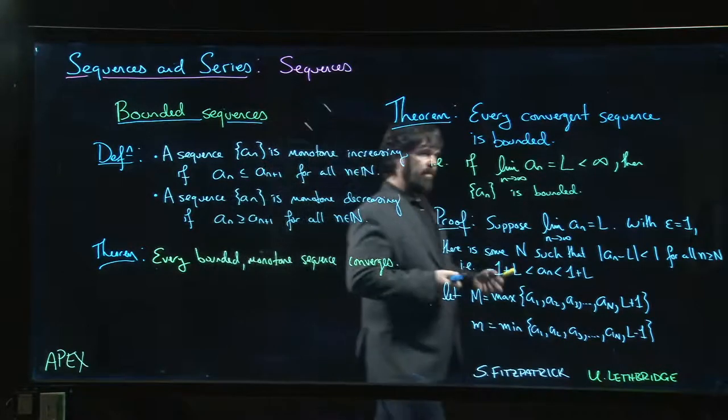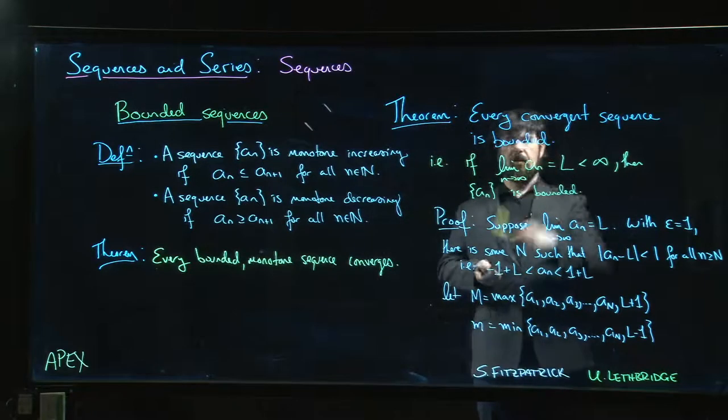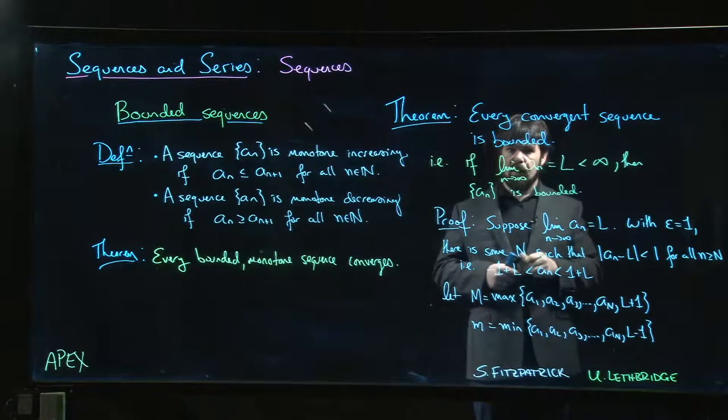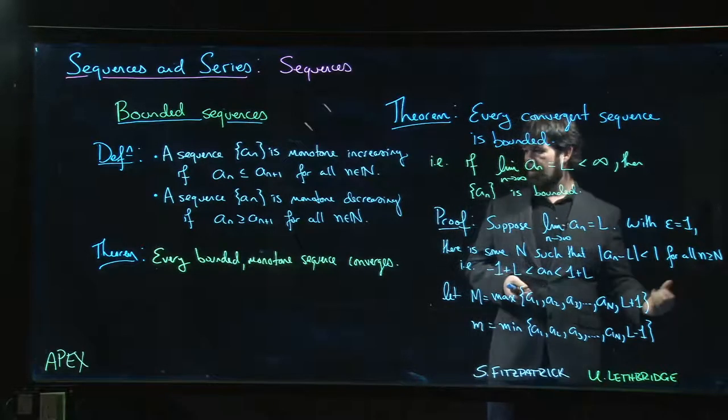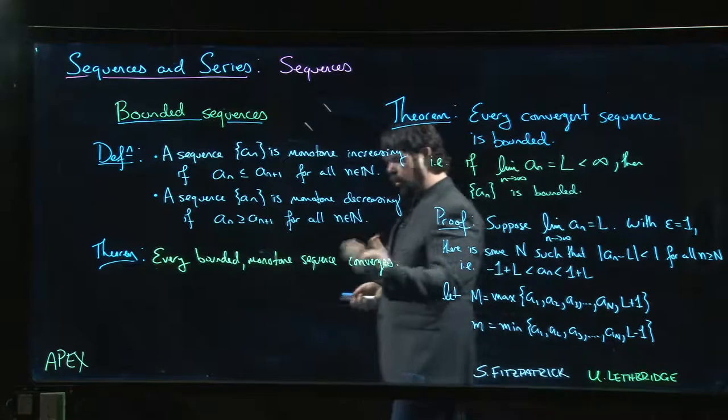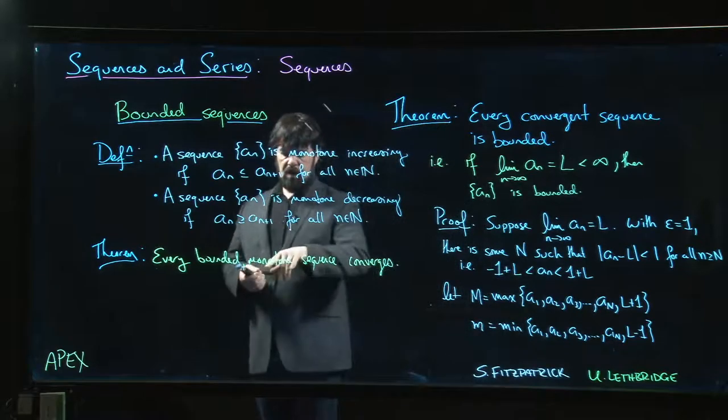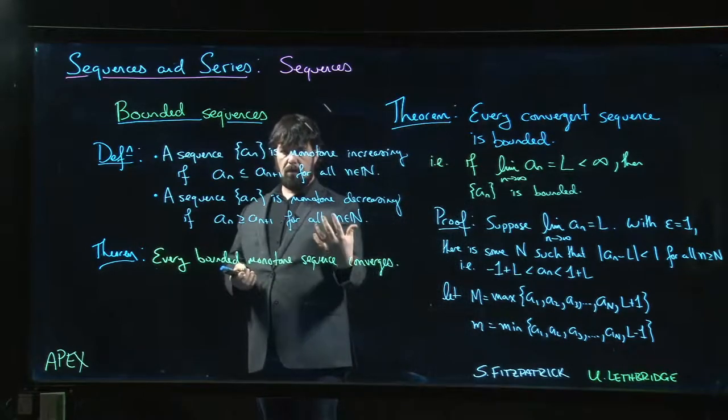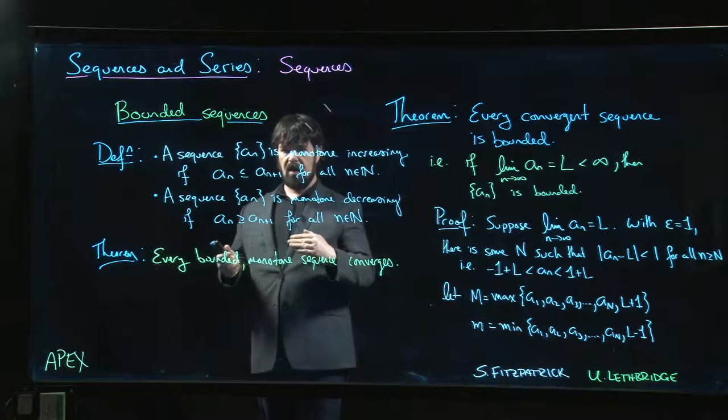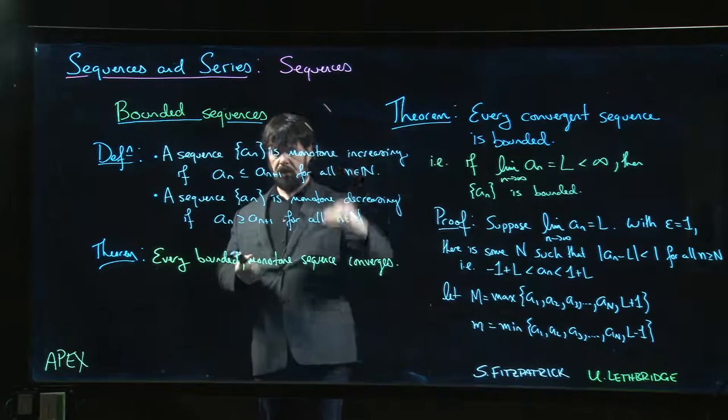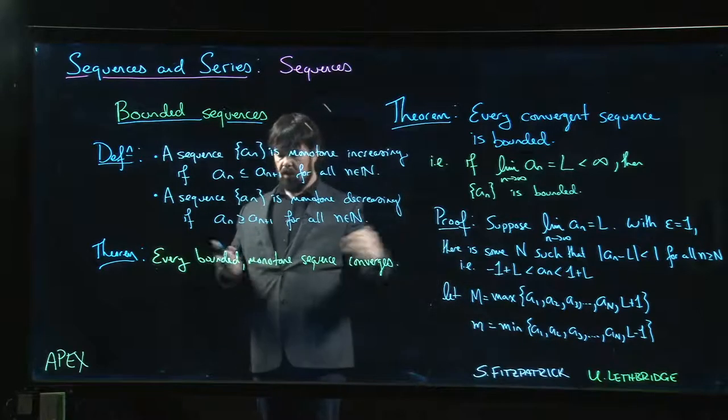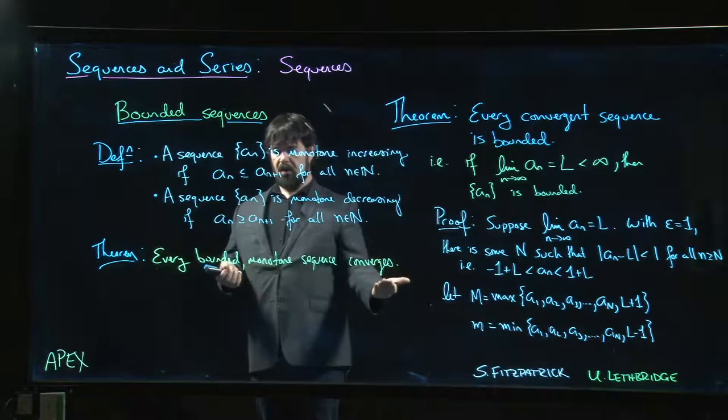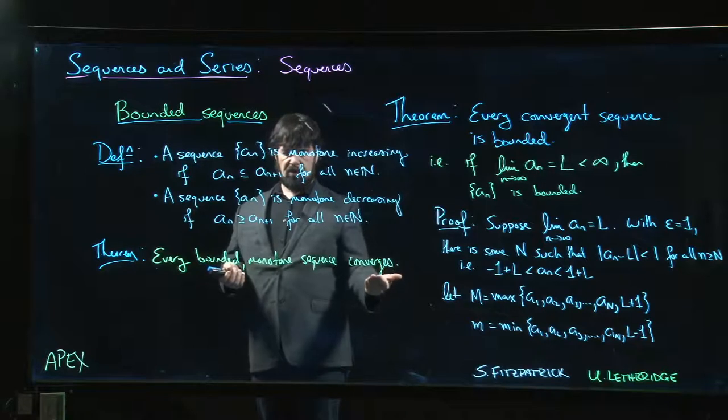We mentioned before that every convergent sequence has to be bounded, and I warned that the converse is not true—every bounded sequence is not necessarily convergent. But if we do have a bounded monotone sequence, the added condition of monotonicity guarantees that you can't have this sequence jumping back and forth, because it always has to be going up or always going down. So you're guaranteed convergence for every bounded monotone sequence.